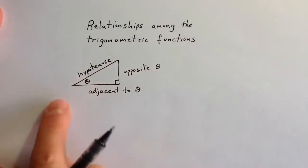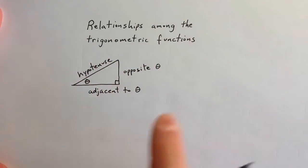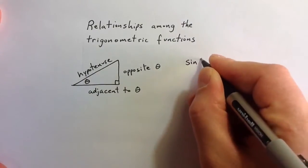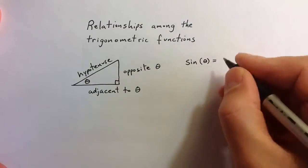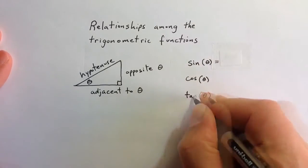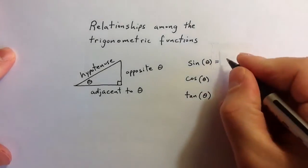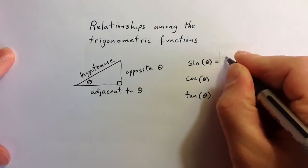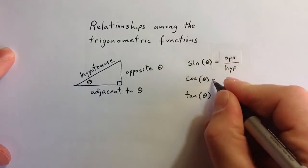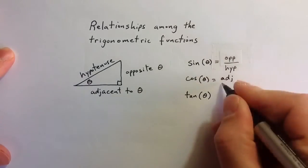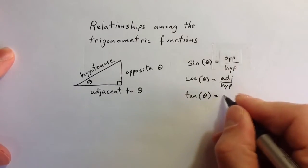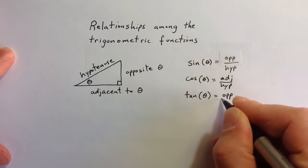From that description of the three sides, we define the three basic trigonometric functions to be sine of theta, cosine of theta, and tangent of theta. The sine ratio is the opposite side over the hypotenuse, cosine is the adjacent side over the hypotenuse, and tangent is the opposite side over the adjacent side.